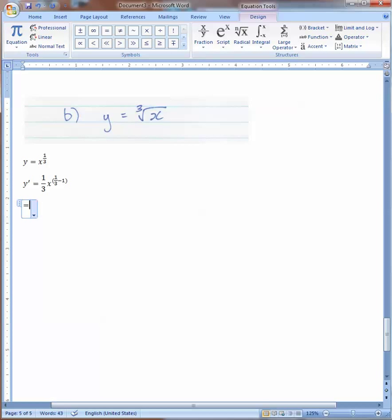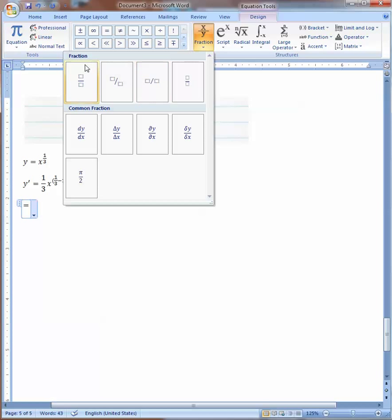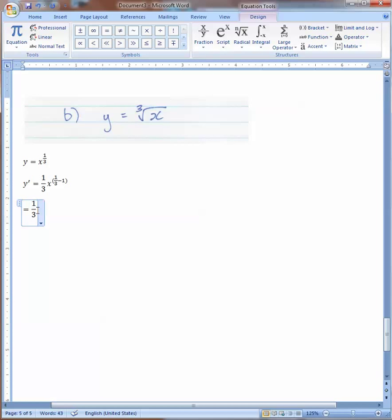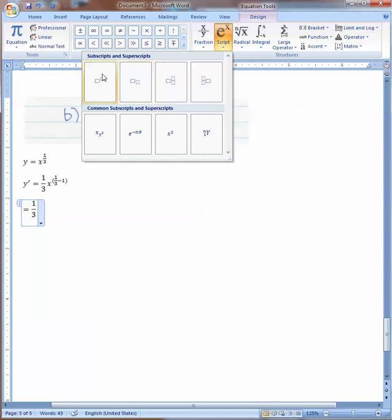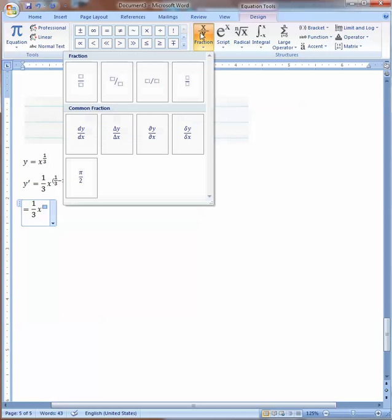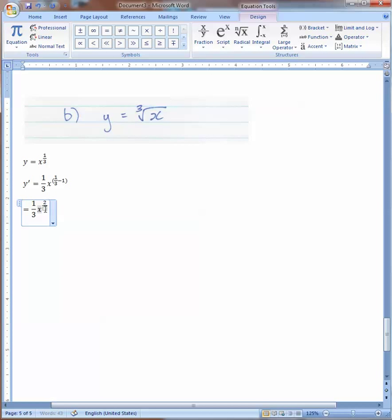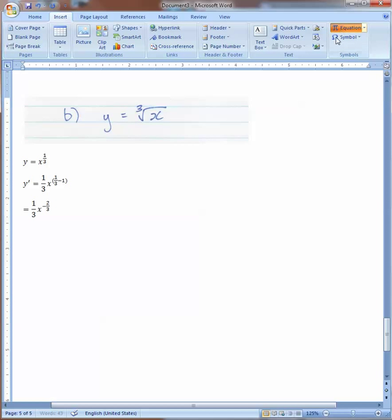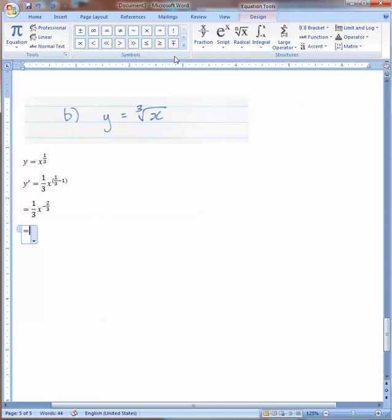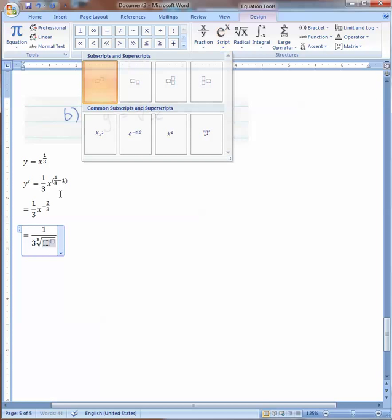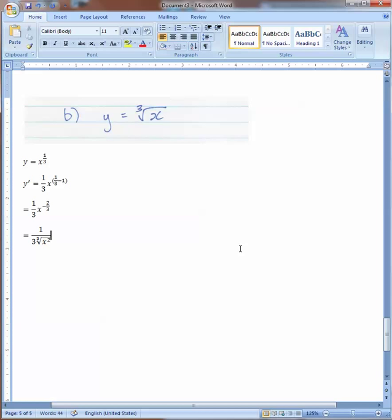So that equals the fraction 1 over 3, x is to the power of a fraction 2 thirds, and that fraction is negative, so we'll express that finally as a fraction. We have a negative exponent, so the x is going to be on the bottom as well, and it's going to be a cube root, there's our cube root, and it's also squared, so there's your final answer.